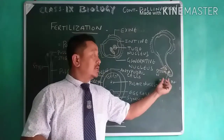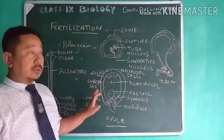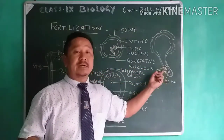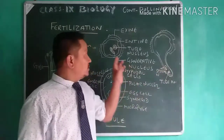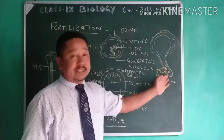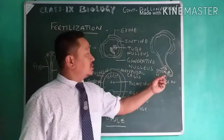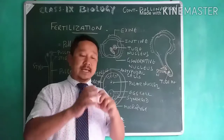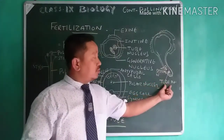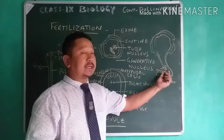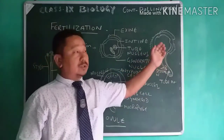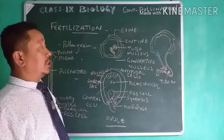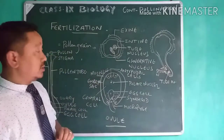In the tube, first you find the tube nucleus directing it towards the ovule. Then the generative nucleus has already divided into two sperm nuclei, which remain together attached in the same cell wall. So you have the tube nucleus and the two sperm nuclei in this tube. This is how the pollen grain develops once it falls on the stigma, at the expense of the sugar produced by the stigma.